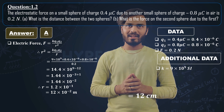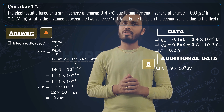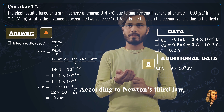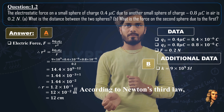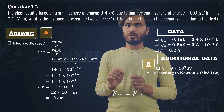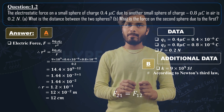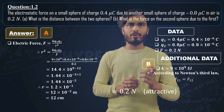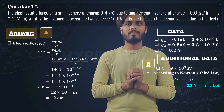For part two — what is the force on the second sphere due to the first? According to Newton's third law, F21 equals F12, meaning the force on sphere 2 due to sphere 1 equals the force on sphere 1 due to sphere 2, which is 0.2 newton. Since one sphere is positively charged and the other is negatively charged, the force is attractive.